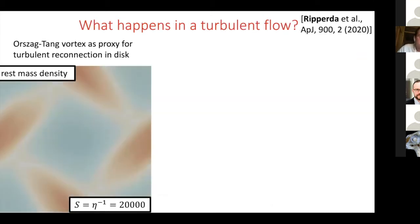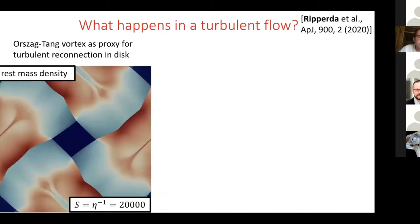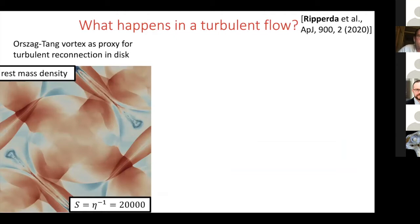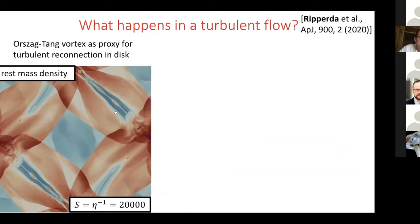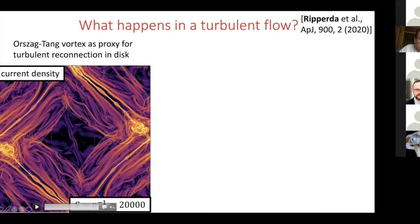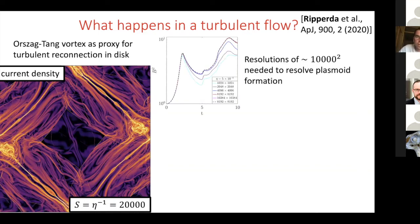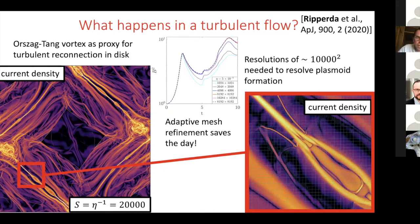So what we want is resistive GRMHD with a small yet resolved resistivity that describes globally the accretion physics and on smaller scales describes the reconnection forming these flares. In a turbulent flow we can test if this works. Here I evolved a simple vortex, and you see a current sheet forms that is plasmoid unstable — for a Lundquist number of 20,000, well in the plasmoid-dominated regime. But looking at the magnetic energy density evolution, you need resolutions of at least about 8,000 squared cells — the cyan line here is under-resolving the magnetic energy density evolution.